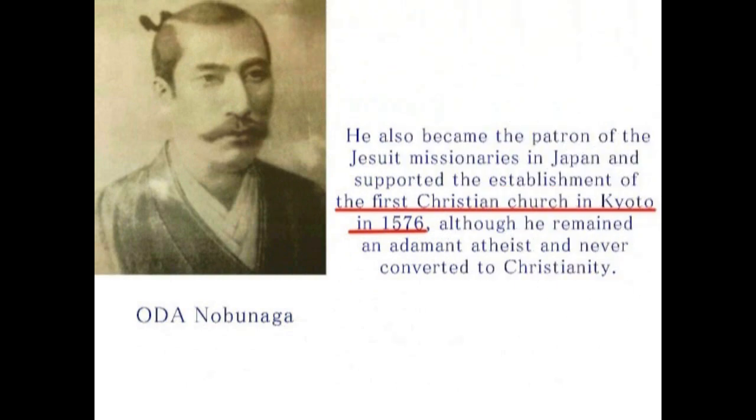右のレンブラントの絵が写真であるとするならば、左の信長のいわゆる肖像画もほぼ写真であるというふうに判断していいのではないでしょうか。1576年に信長は京都に初めてのキリスト教会を建てることを支持しました。